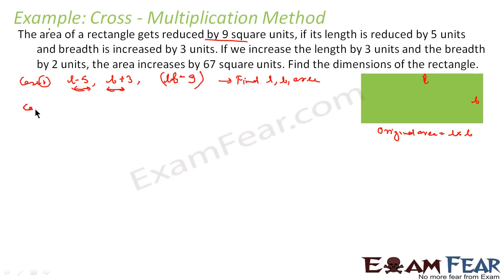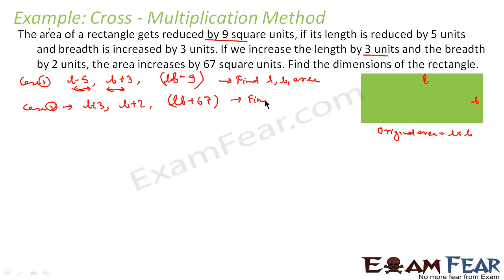Case 2: increase the length by 3 units, so the length becomes l plus 3; breadth by 2 units, so the breadth becomes b plus 2; and the area is increased by 67, so the final area becomes lb plus 67. Therefore: (l plus 3) into (b plus 2) equals lb plus 67. These are the final length, breadth, and area for each case.